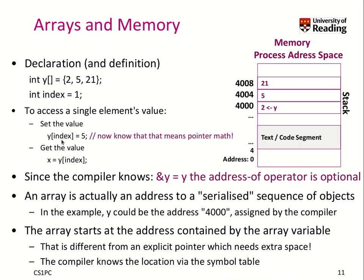Let's now look at arrays again and see the differences to pointers and the similarities. First, let's have a look at our array y, which stores the values 2, 5, and 21, and y is of type integer. Note that here we haven't given the compiler the number of elements in the bracket notation, because it knows that this is initialized with 2, 5, and 21, so it knows it's three elements.